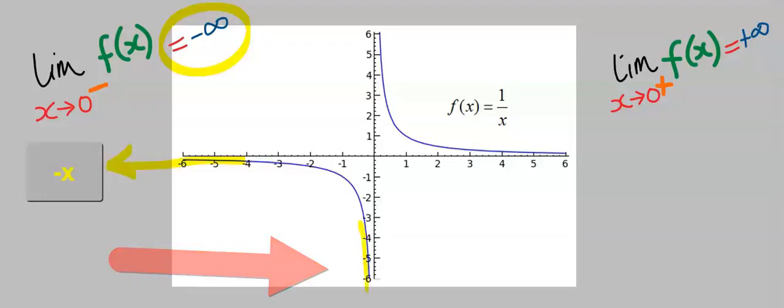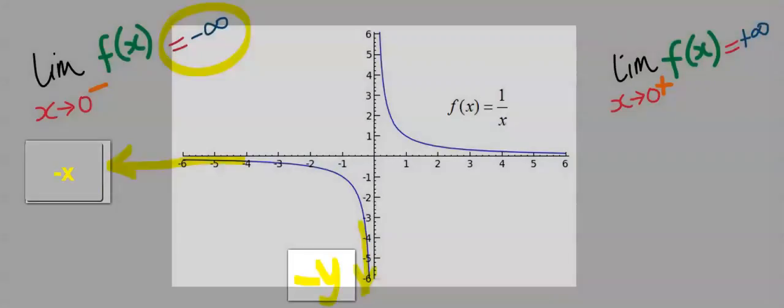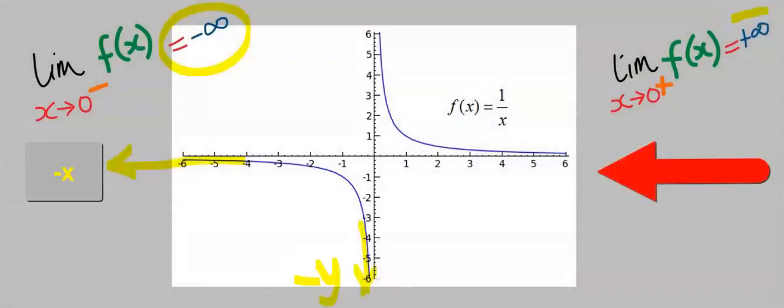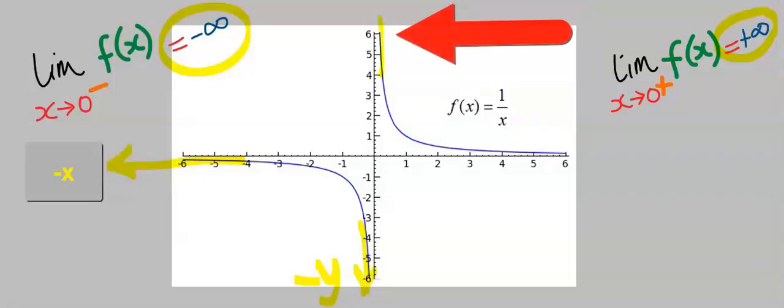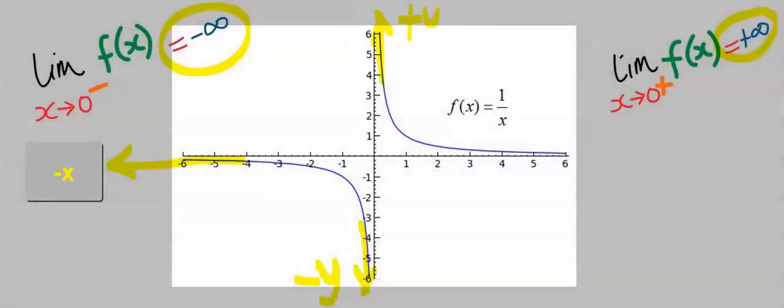This is going towards negative infinity, towards minus y. Similarly, as the function approaches from the right-hand side, it is tending towards positive infinity. This is going towards positive infinity.